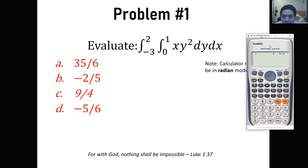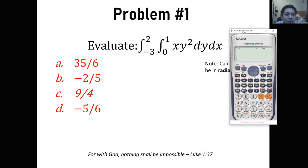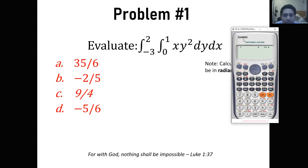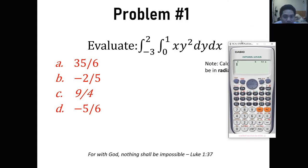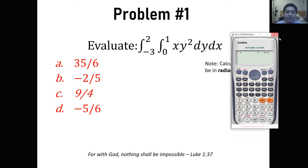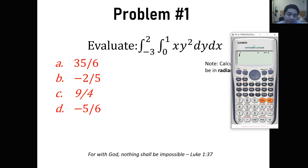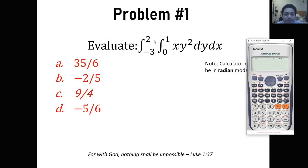For problem number one, always remember that we need to switch our calculator to radian mode. As you can see now, I'll be setting up my calculator in radian mode rather than degree mode. So evaluate this given integral, a double integral basically composed of two variables x and y, dy over dx. The very first thing we need to learn before evaluating this integral is to set a pattern.